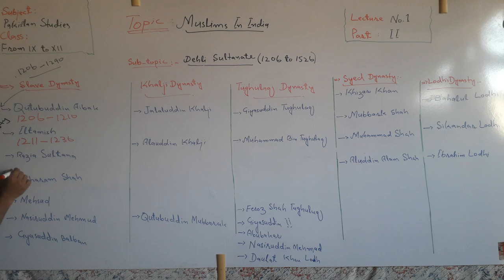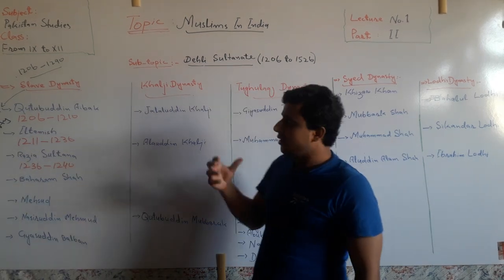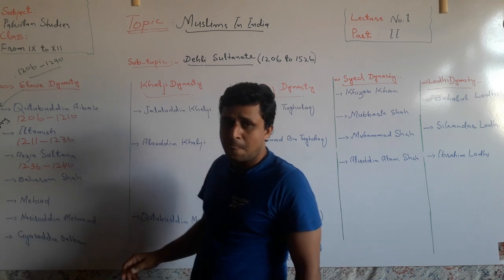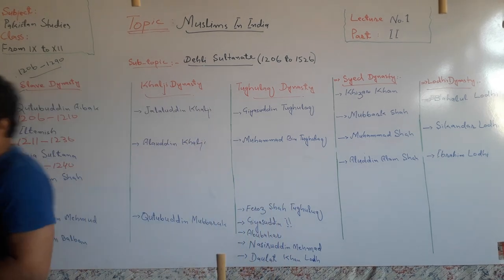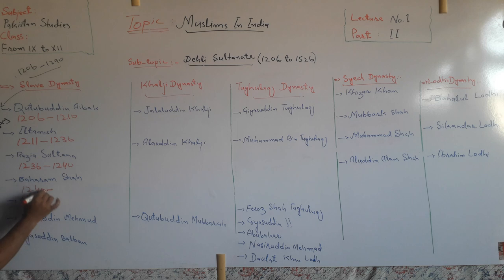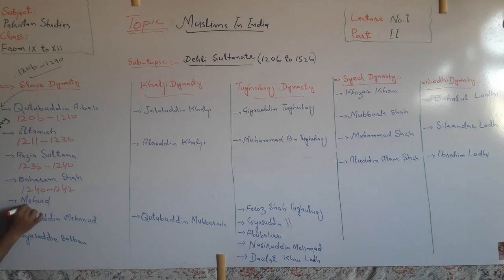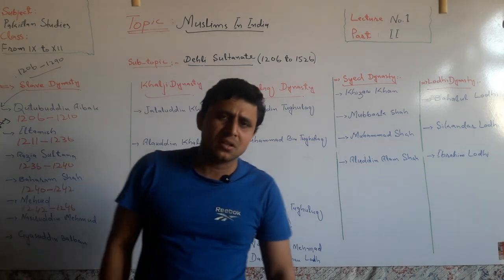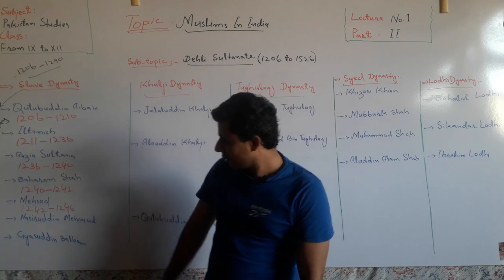After Iltutmish, Raziya Sultana — daughter of Iltutmish — occupied the throne from 1236 to 1240. She was the first Muslim woman ruler in the subcontinent as well as in the world. After Raziya Sultana, Bahram Shah ruled from 1240 to 1242, and Masood ruled from 1242 to 1246.